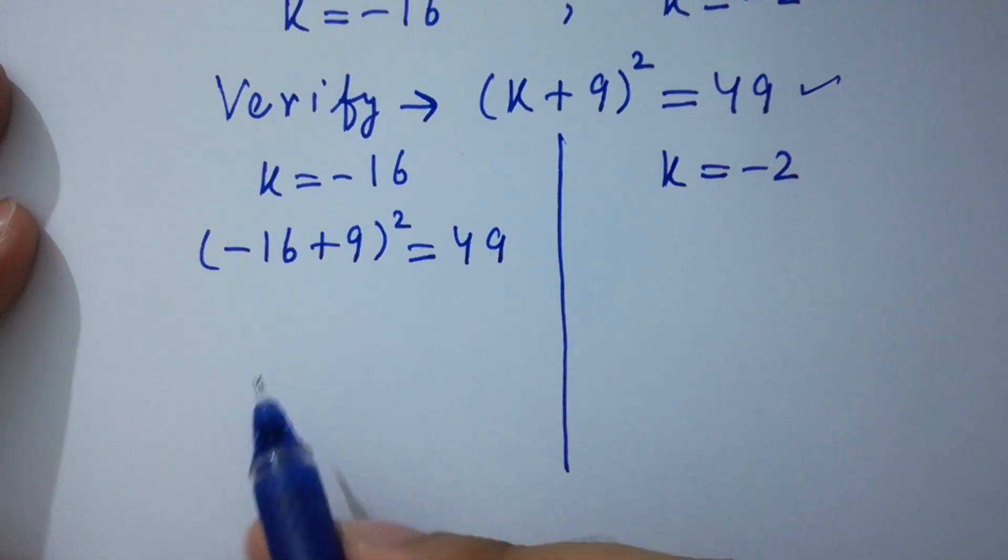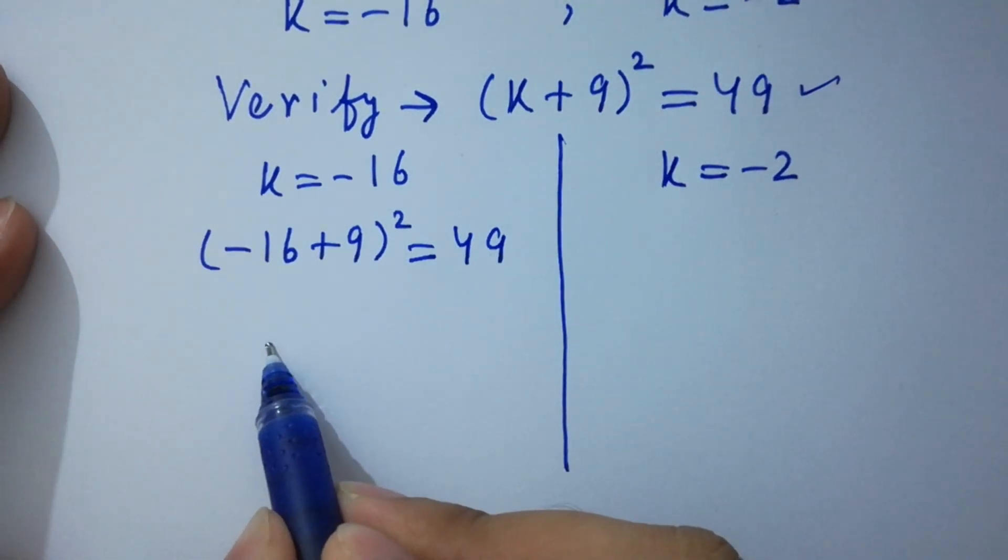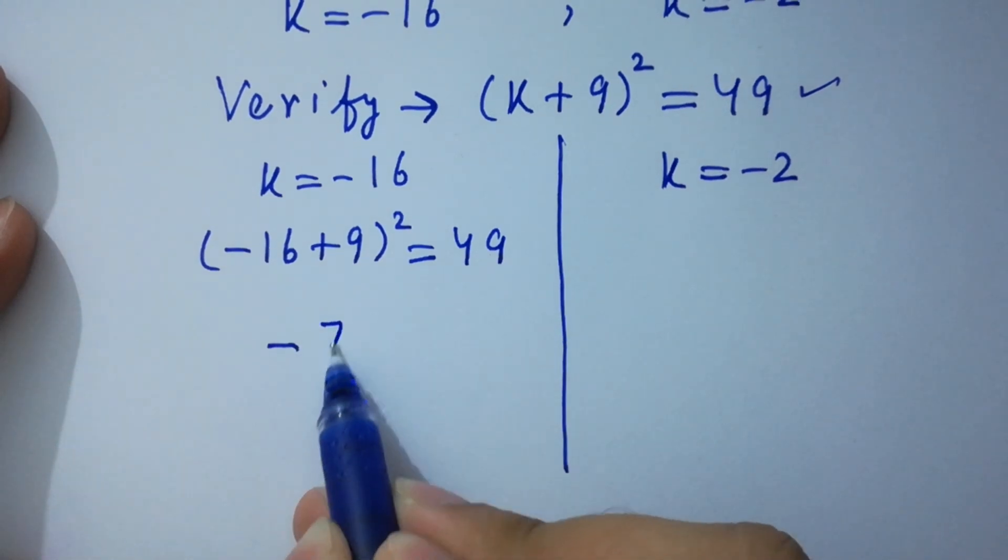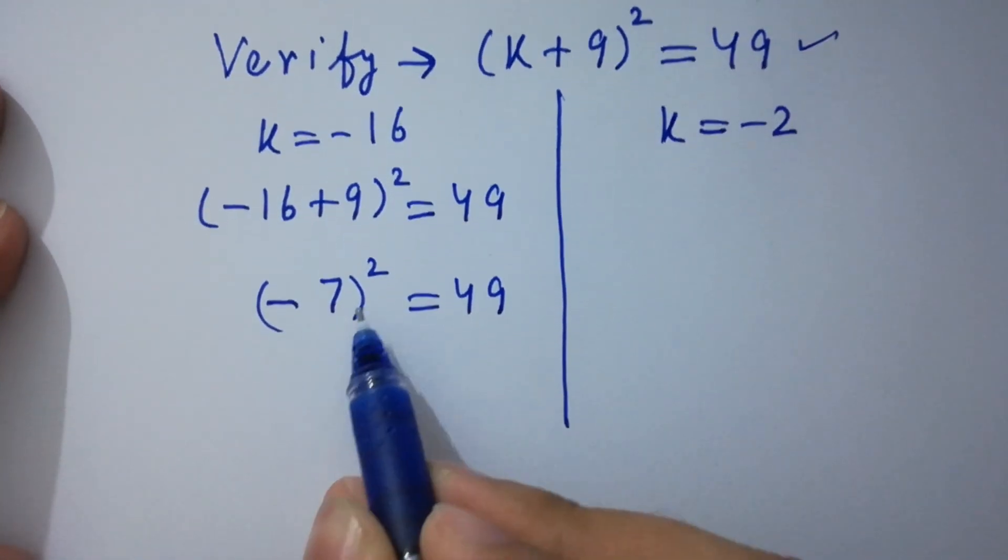Simplify this. We have here -16 + 9, we have here -7 whole square equal to 49. This is true.